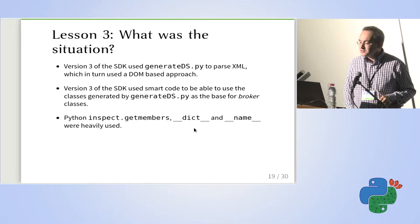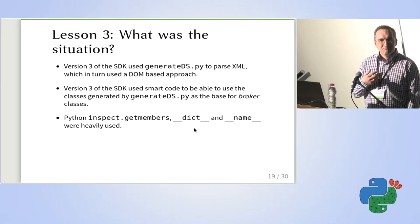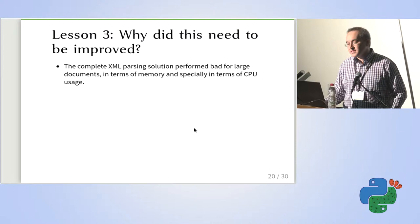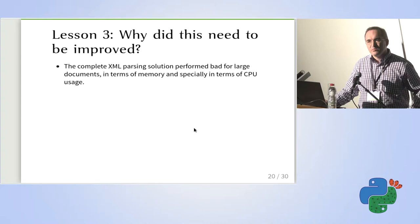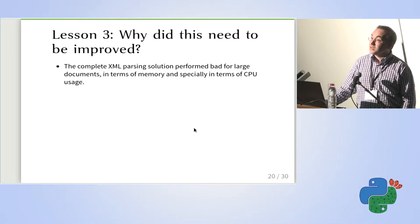We used to generate the param classes with generateDS.py, with broker classes extending the base classes. In order to make that work, we had to do a lot of black magic — a lot of use of `inspect` to get members, a lot of use of `__dict__` and `__name__`, things like that. The result was that the XML parsing solution was very slow, especially for large documents and large sets of information.